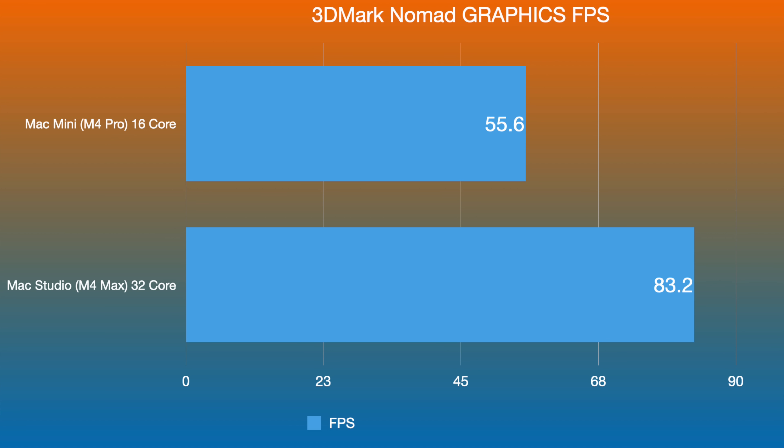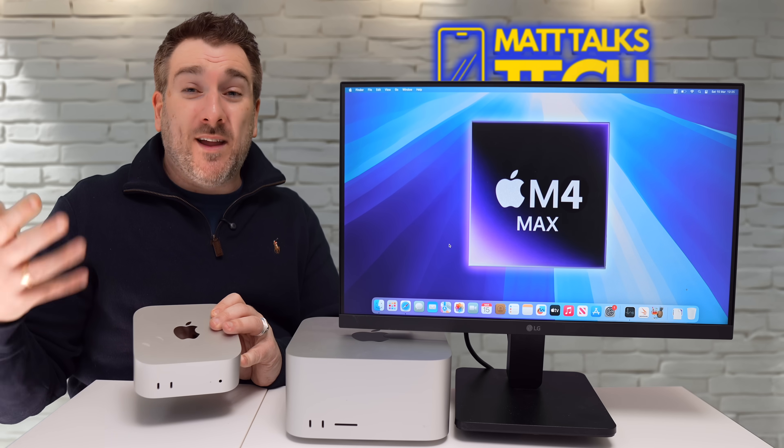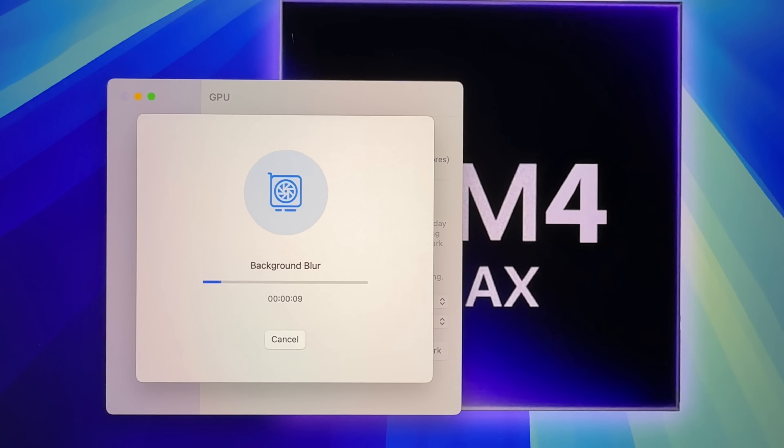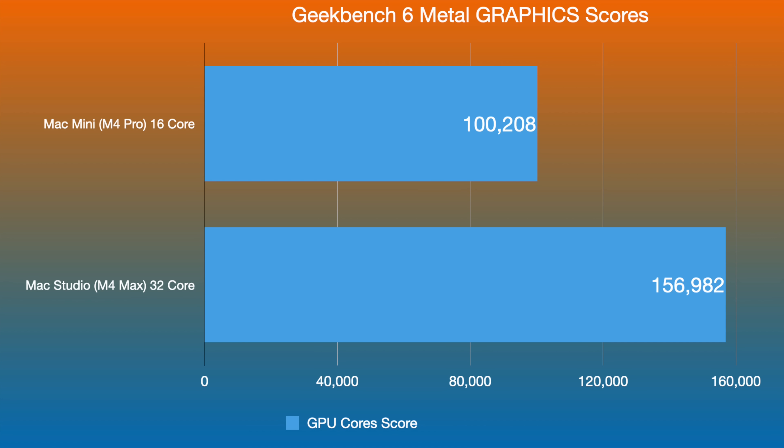In the Geekbench GPU benchmark, the Mac Mini M4 Pro with 16 cores scored 100,208 compared to 156,982 for the Mac Studio M4 Max. Again, just over 50% difference — consistent with the 3DMark result. Double the GPU cores gives roughly 50% more performance, not 100%.